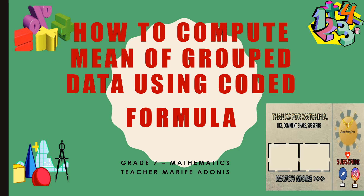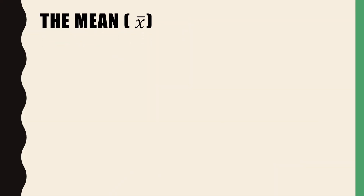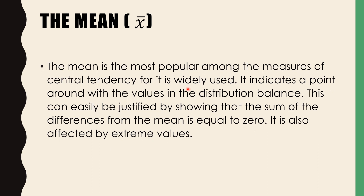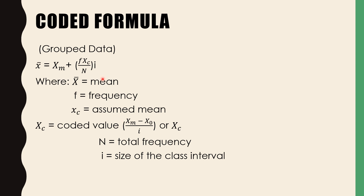Our lesson for today is how to compute the mean of grouped data using the coded formula. This is the third formula for finding the mean, and it will be explained in English and Filipino for Mathematics Grade 7, fourth quarter. The mean is the most popular among the measures of central tendency. It is widely used and indicates a point around which the values in a distribution balance. The sum of differences from the mean is equal to zero, and it is affected by extreme values.